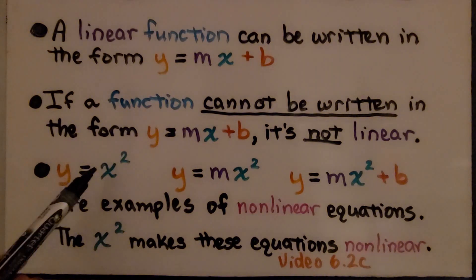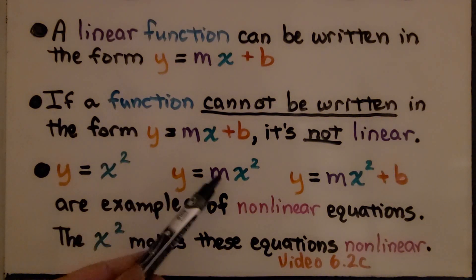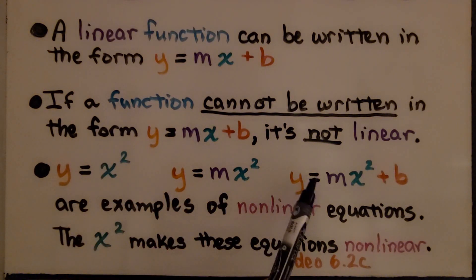y equals x squared, y equals mx squared, or y equals mx squared plus b are examples of non-linear equations. The x squared makes these equations non-linear. You can see a link in the video description for 6.2c, the previous one, where we went over that.